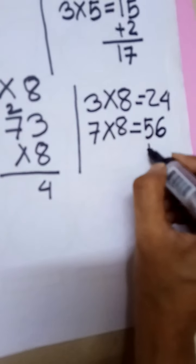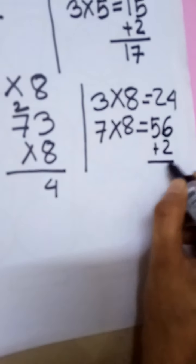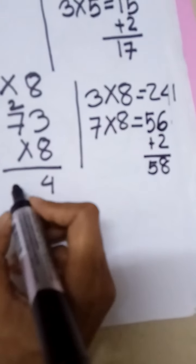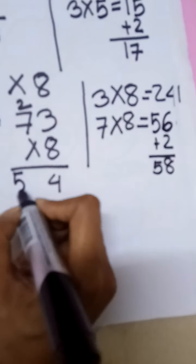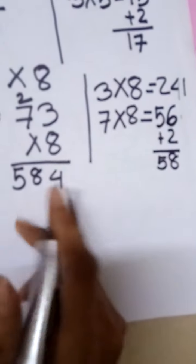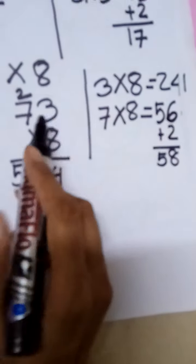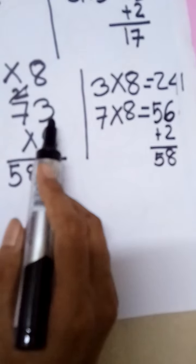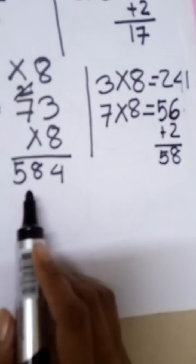56 plus the carrying 2 equals 58. The answer is 584. Then 73 multiplied by 8, the answer is 584.